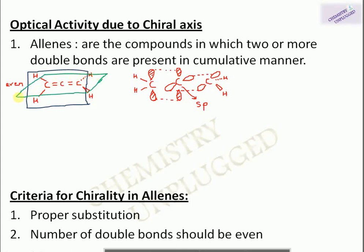Similarly, another plane containing the other two hydrogens can also divide the allene into two equal halves. So allenes substituted with hydrogens on both ends contain two vertical planes of symmetry and are therefore optically inactive or achiral, since chirality requires the absence of vertical planes, alternating axes of symmetry, or a center of symmetry.